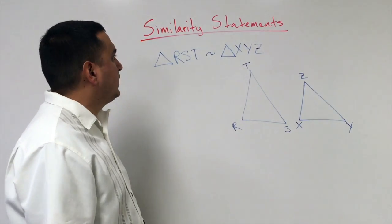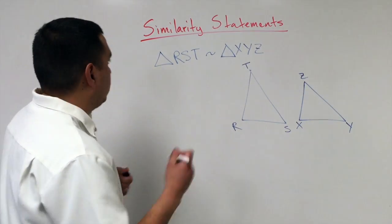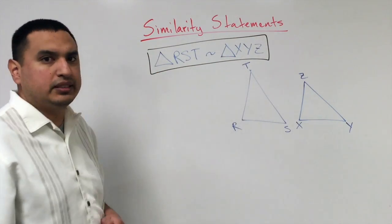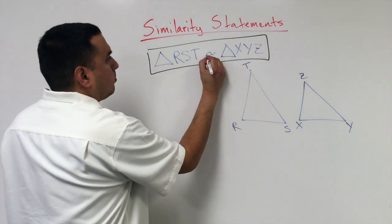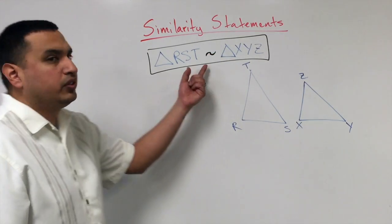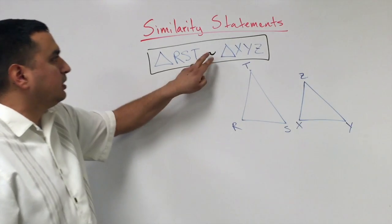So similarity statements - that's what this is right here. Triangle RST is similar to triangle XYZ. This little wave here, this tilde, that's the symbol for similar. That's how you know what it's talking about.